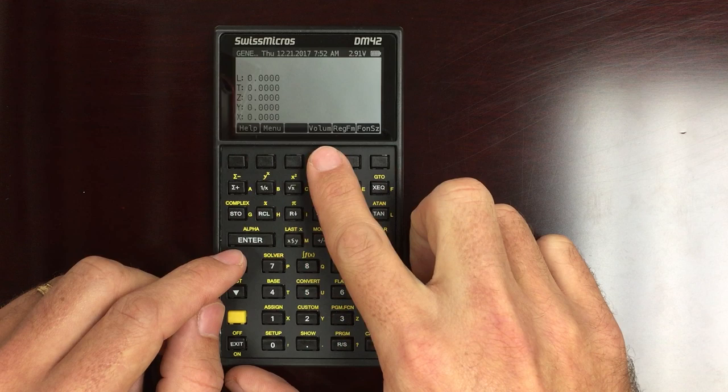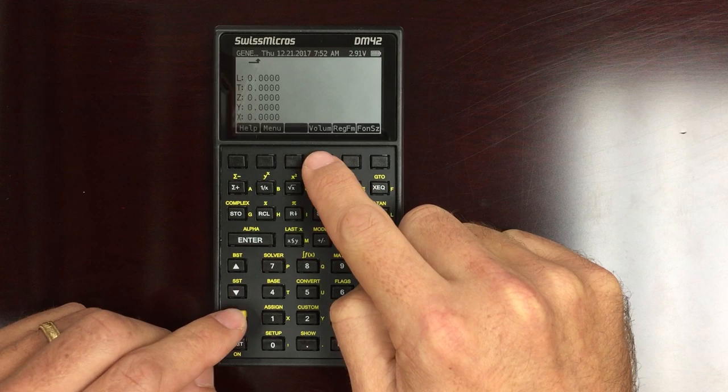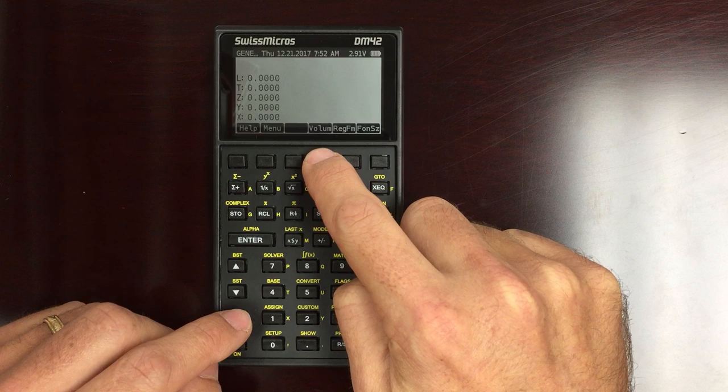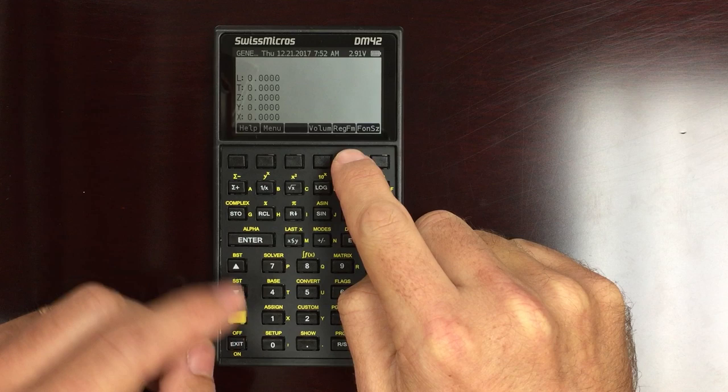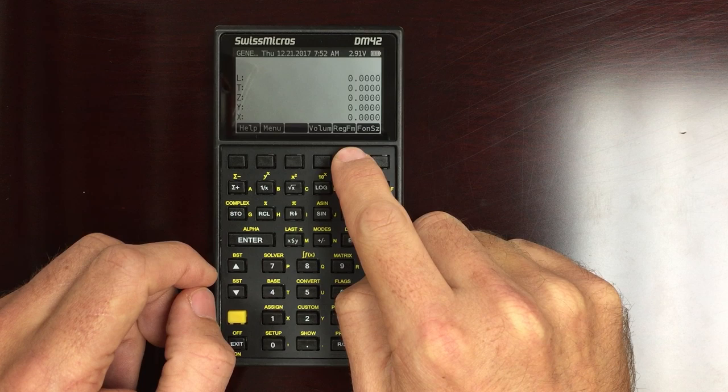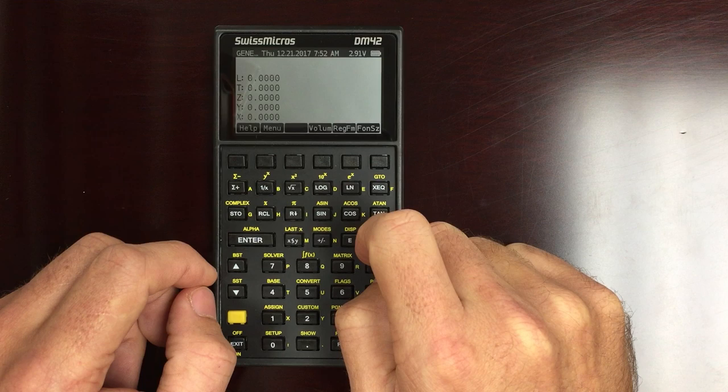Go back to this menu. Volume control. So pressing that makes the volume go up. Pressing shift makes the volume get quieter. This changes the display. So right now it's in a regular format on the left hand side. I can change it to switch to the right hand side. And then right hand with leader lines underneath them. And back to regular.